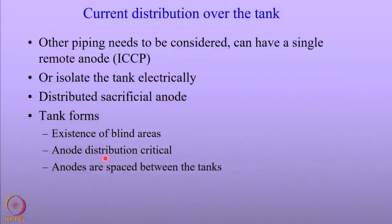In this case, the other pipings need to be considered. You can have a remote anode so that the current distribution becomes easier, or isolate the tank electrically. With a remote anode, you can also account for other pipings connected to the tank.